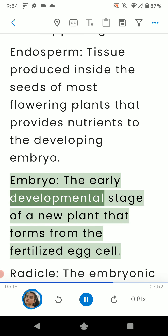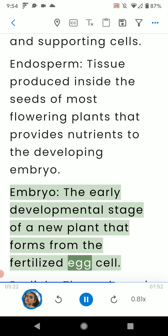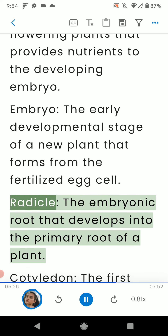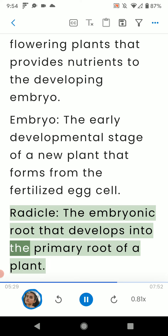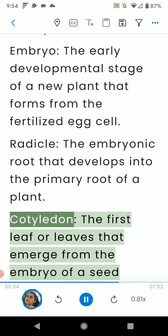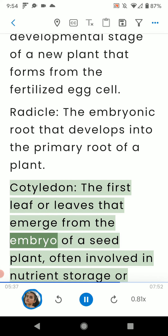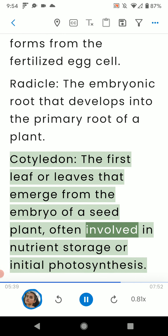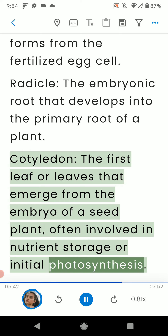Embryo: the early developmental stage of a new plant that forms from the fertilized egg cell. Radicle: the embryonic root that develops into the primary root of a plant. Cotyledon: the first leaf or leaves that emerge from the embryo of a seed plant, often involved in nutrient storage or initial photosynthesis.